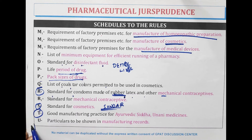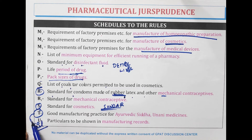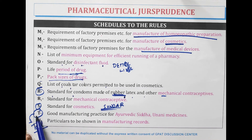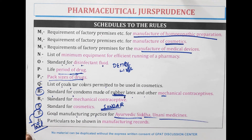Schedule T — T for tail (tel). Tel is an Ayurvedic formulation. So Schedule T is for good manufacturing practices for Ayurvedic, Siddha, and Yunani medicines.